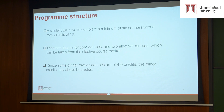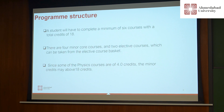In terms of program structure, a student will have to complete a minimum of 6 courses with a total of 18 credits. Among these 6 courses, there are 4 minor core courses and 2 elective courses. The elective courses can be taken from an elective course basket, which I will show you later on. Since some physics courses are more than 4 credits, the minor credits may go above 18, but there will be a minimum of 6 courses with a minimum of 18 credits total.